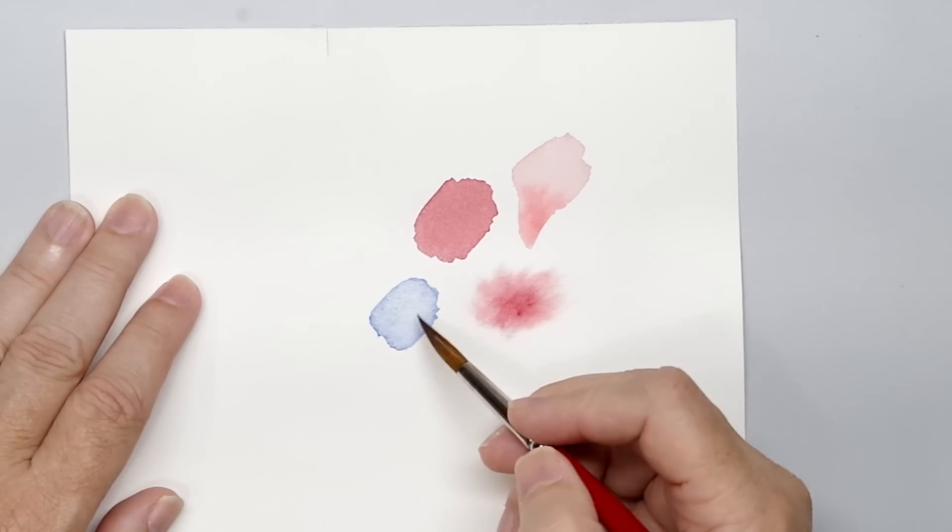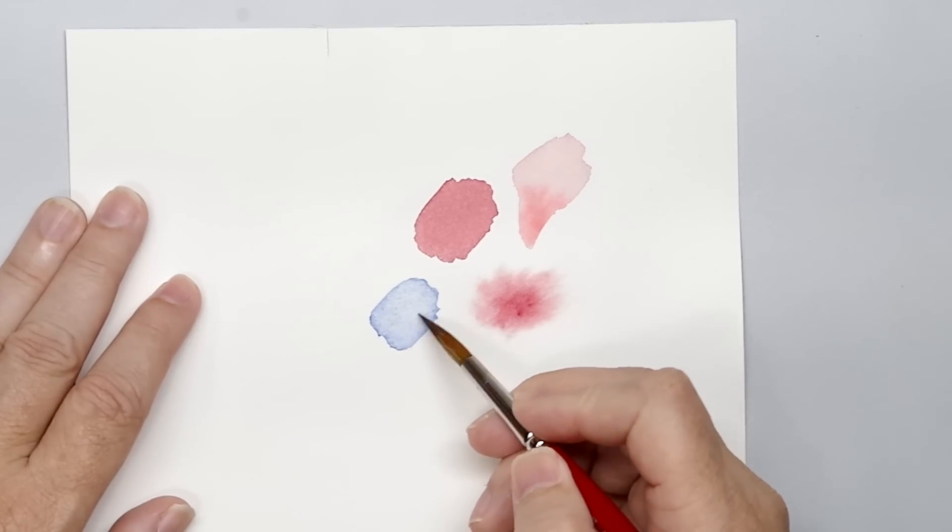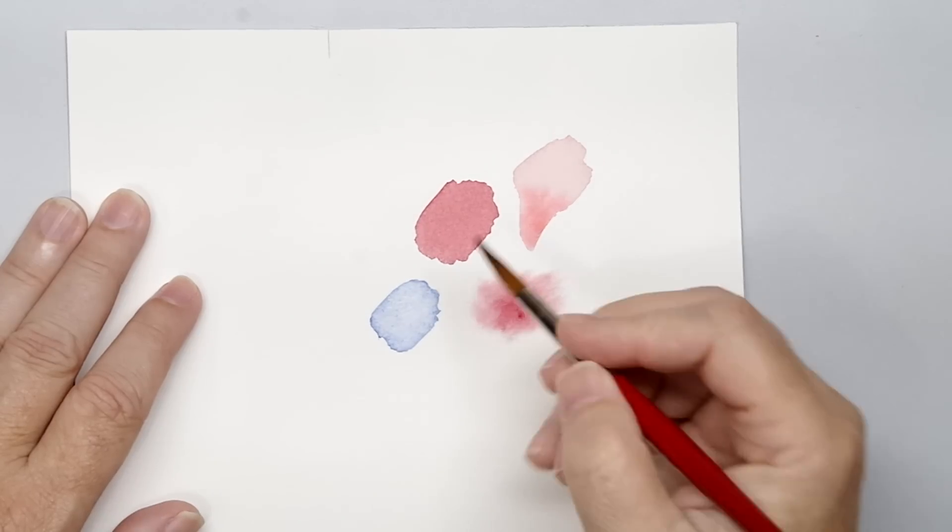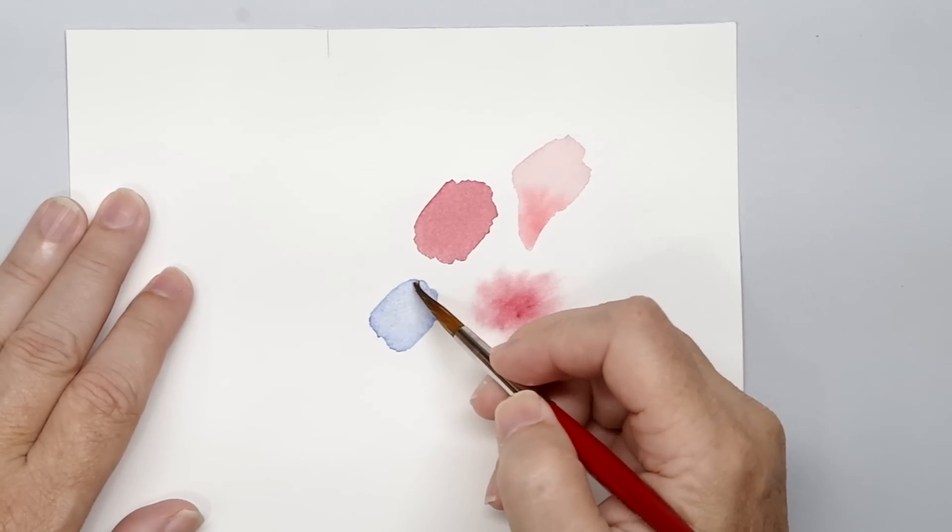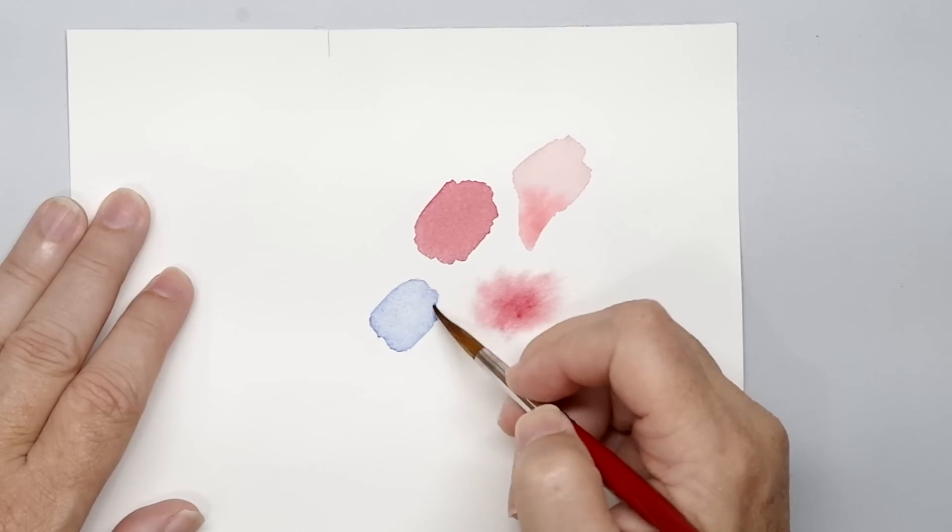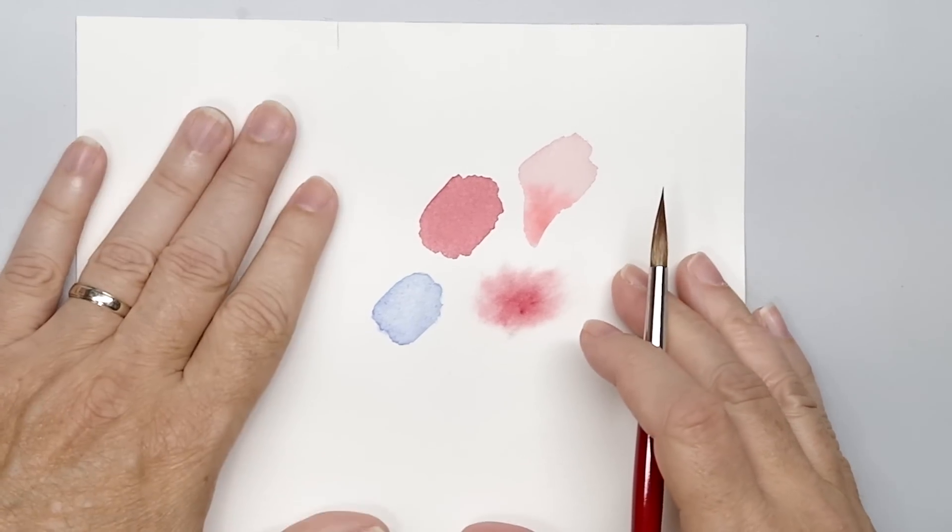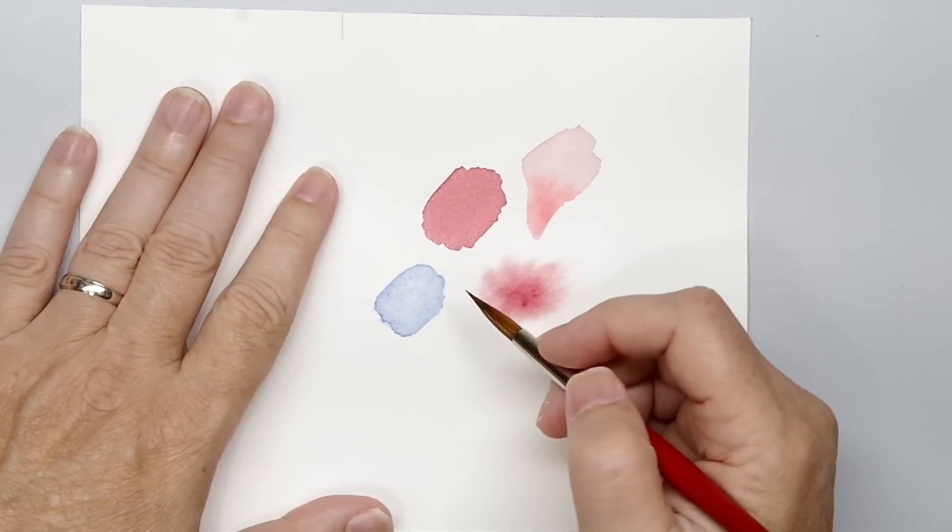So you'll say, oh, I got this nice and faded, nice and pale here. But what happened out here? It didn't bleed out evenly. That's because it's already dried on the edge. So there is the reason.